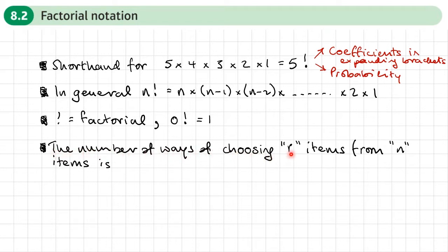The number of ways of choosing r items from n items is written like this, n, c, r. Now, the c stands for choose. An example of this might be, let's say I've got 10 cards.